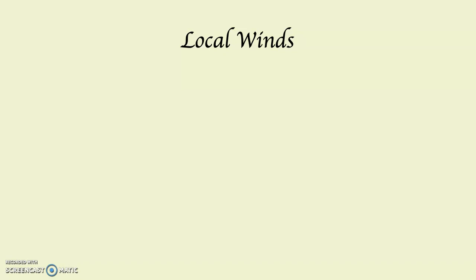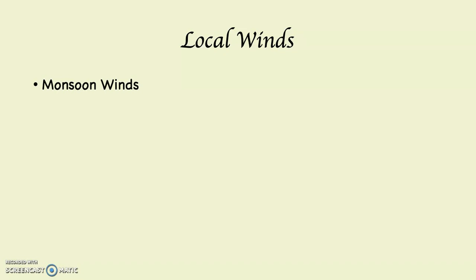There are three types of local wind systems: the monsoon winds — a very famous set of winds — the onshore/offshore winds or onshore/offshore breezes, also known as the sea breeze and land breeze, and the valley breeze and mountain breezes. This first video on local winds is going to be about the monsoons; the next video will be about the other two.